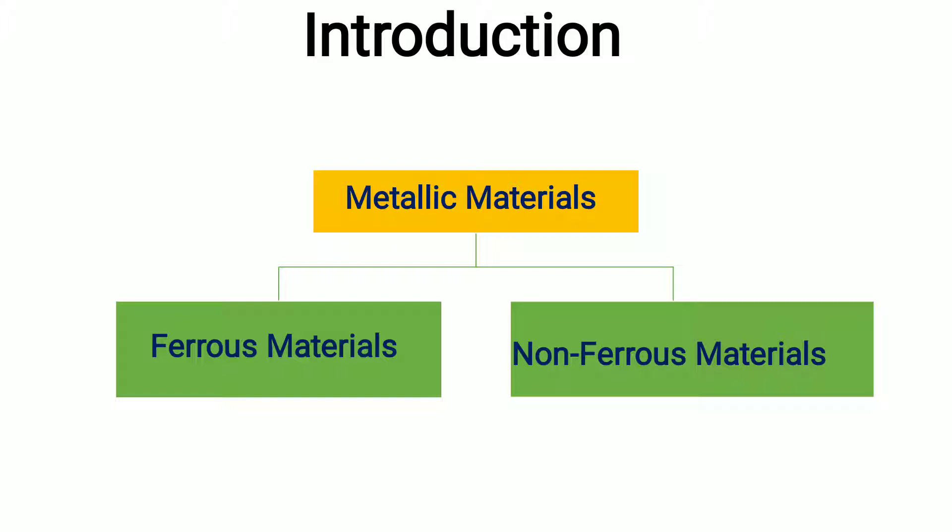Ferrous materials include the metals and alloys which contain iron as their main constituent, whereas non-ferrous materials and alloys do not contain iron as their main constituent. In non-ferrous materials, iron may exist in very small amounts only.